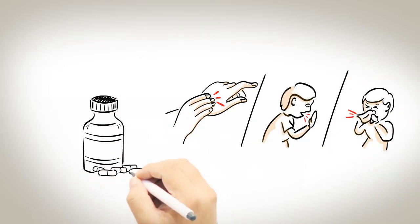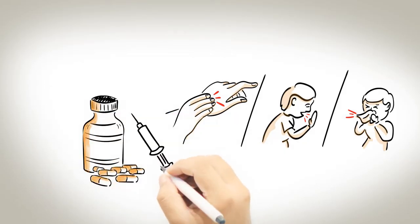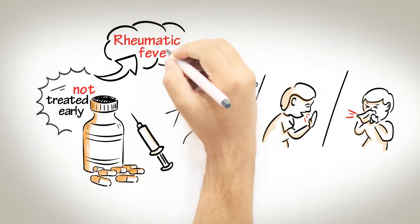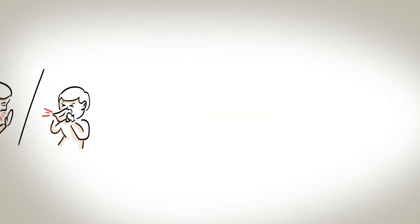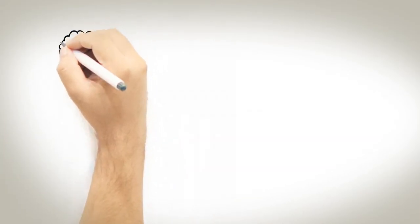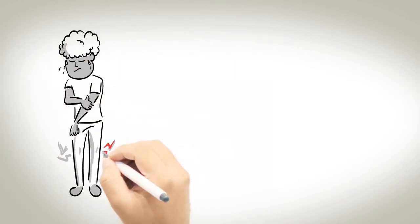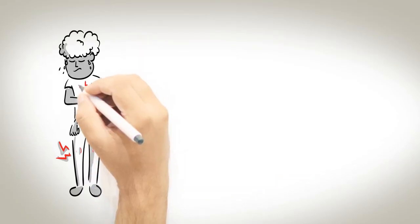In some people, if sore throats and skin sores are not treated early with antibiotics, an illness called rheumatic fever develops. Rheumatic fever can cause painful, swollen joints, fever, uncontrolled jerky movements and inflammation or swelling of the heart.